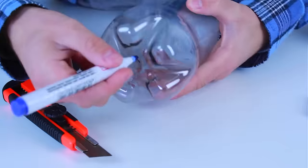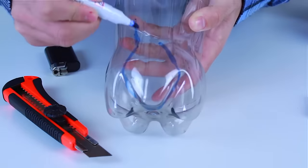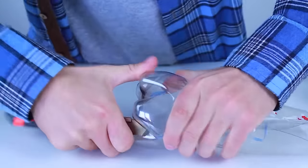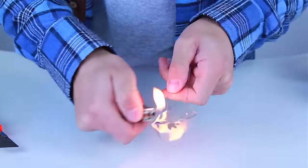We can also make simple spoons from the bottom part of the bottle. To make them, draw a line around one of the five legs of the bottle, as shown, and cut it out with a knife or scissors.